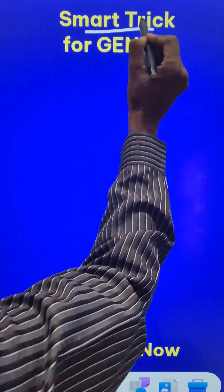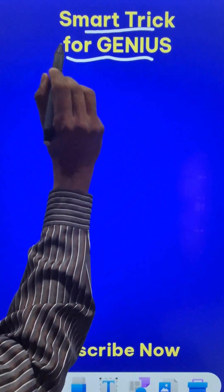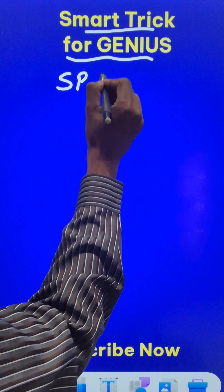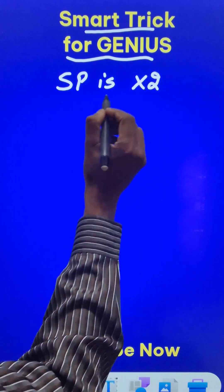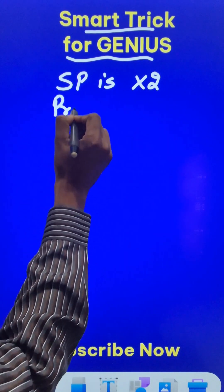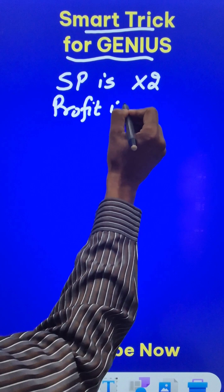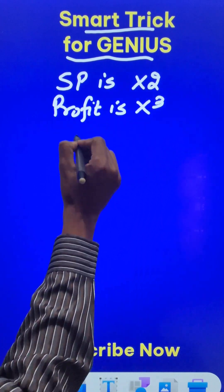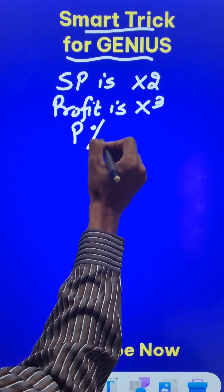Here is a smart trick for the genius. Suppose the question says that the selling price is doubled (multiplied by 2) and the profit is tripled (multiplied by 3). We need to find the profit percent.